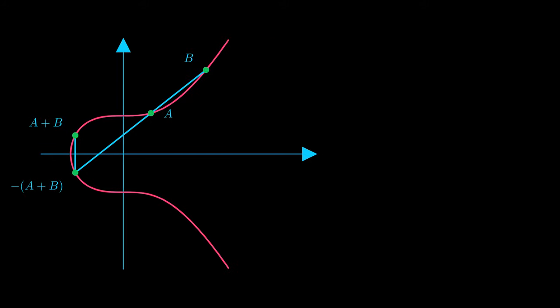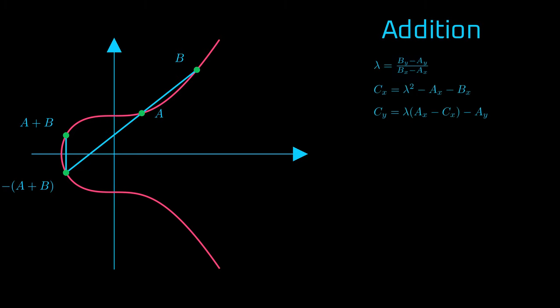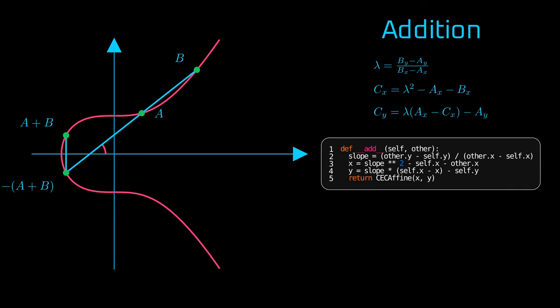If we look at the math of the addition, it is a little bit more complex than negation. First, we need to calculate the slope, which describes the angle between the line and the x-axis. With that, we can calculate the x and y of a C point with the following equations. And if we were to implement such an operation in the code, we would overload the addition operator and would simply implement the math from above.